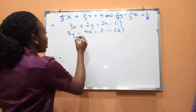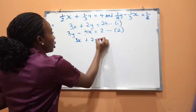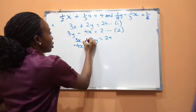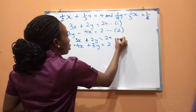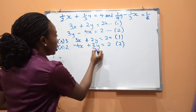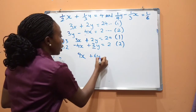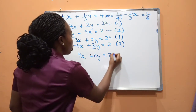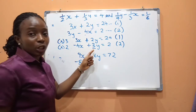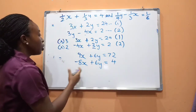Rearranging equation 2 in standard order: −4x + 3y = 2. Now to eliminate y, we multiply equation 1 by 3 and equation 2 by 2. Equation 1 becomes: 9x + 6y = 72. Equation 2 becomes: −8x + 6y = 4.